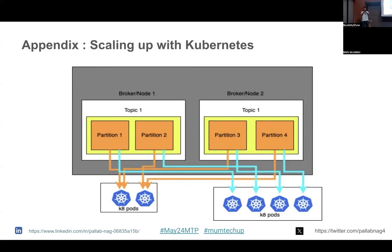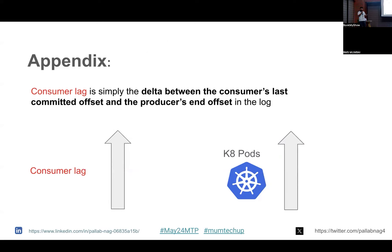If most of your organizations use Kubernetes, one pod can be one of your consumers. You can scale up the pods one by one. At the same time, we saw something called consumer lag, which tells me how much my consumer is lagging — how many messages are waiting in the queue. We can use that threshold to scale up pods. For example, keep a threshold of 100 or 1000 messages: if consumer lag goes beyond 1000, spin up a new pod. That's just a reference for those using Kubernetes.